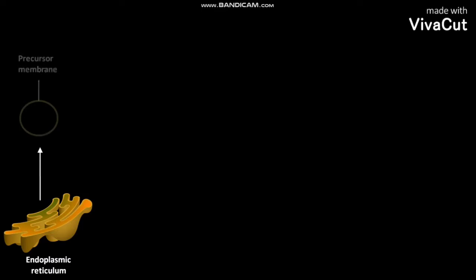During the de novo formation of peroxisomes, the endoplasmic reticulum of a cell forms precursor membrane.